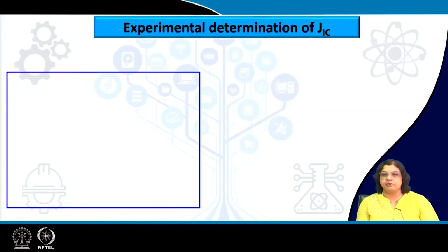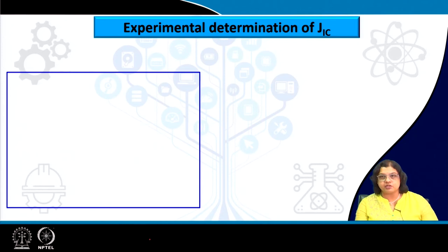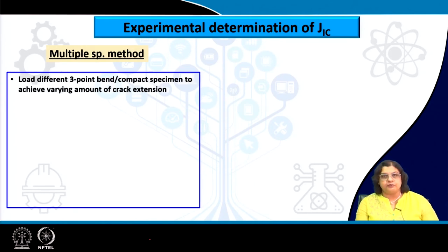Now let's see how J1C is determined experimentally, implementing the concepts and formulas to get real material values. We can use the multiple specimen method: specimens of similar configuration but with different crack lengths or different applied loads leading to different crack extensions. For example, using a 3-point bend or compact tension specimen, different specimens are loaded to achieve varying amounts of crack extension.